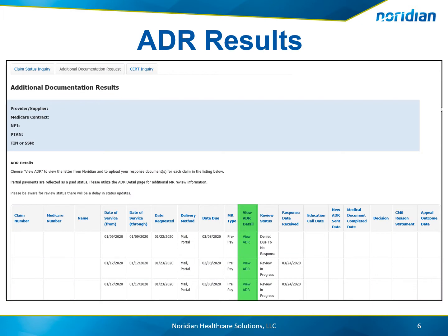The ADRs that fit your search criteria will display. The results will show the following: claim number, Medicare number, beneficiary name, date of service, date requested, delivery method, the due date, the MR type, the review status, the response date received, the education call date, the new ADR sent date, medical document completed date, the decision, and the appeal outcome date.